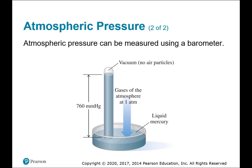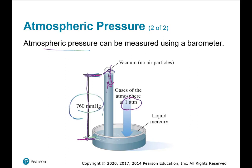Atmospheric pressure can be measured using a barometer. At sea level, when atmospheric pressure equals one atmosphere, we can measure 760 millimeters of mercury that has been sucked up into the tube. As air pressure increases or decreases, it can push the mercury down or cause it to rise more, so it can be greater or less than 760 depending on where you're taking your measurements.